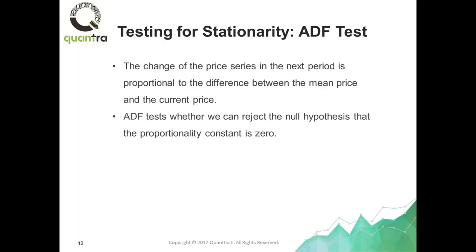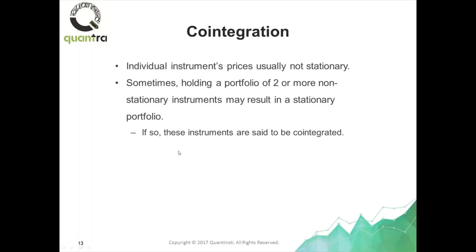The statistical test capitalizes on this observation. It is testing whether the regression coefficient between the next period's price change and the current difference between the mean and the price is significant. If we can reject the null hypothesis that that proportionality constant is zero, then there's a good likelihood that this price series is stationary — that it is mean-reverting. The ADF test is nothing but a statistical significance test of the regression coefficient to see if it is zero or not.